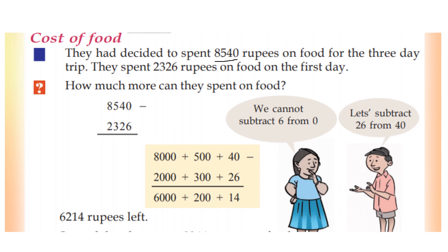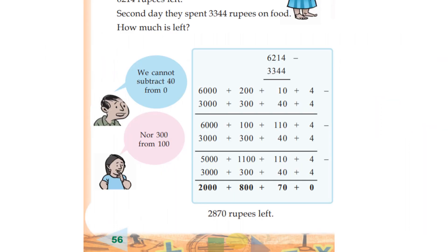How much more money can we spend? 8,000 plus 500 plus 40, minus 2,326 — that is 2,000 plus 300 plus 26. 8 minus 2 is 6,000. 6,000 plus 200, and 5 minus 3 is 2. 200 plus 40 minus 26 is 14. So 6,214. On the second day they spent 3,344 on food. How much is left?